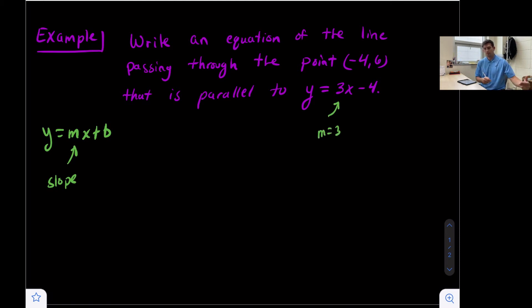According to our theorem about slopes of parallel lines, the line we need to write also needs to have a slope of 3. So our line right now is y = 3x + b.